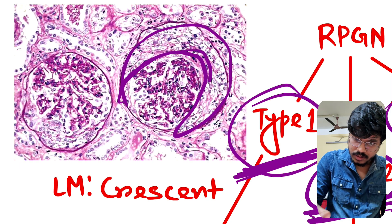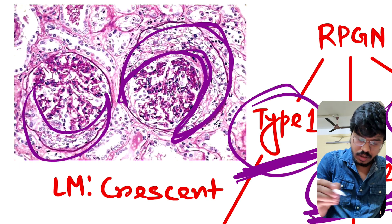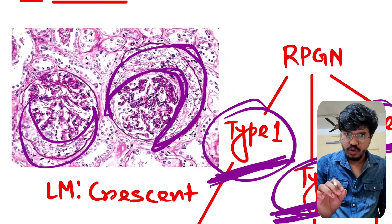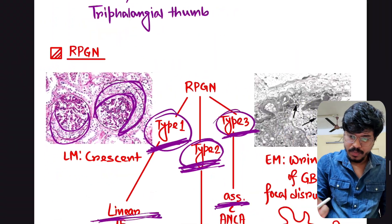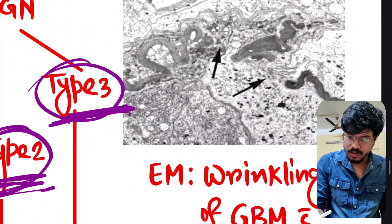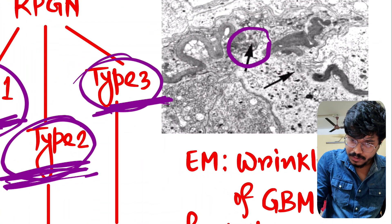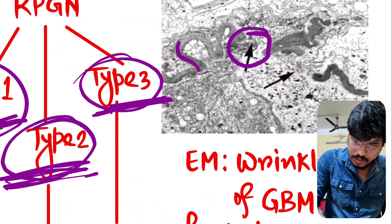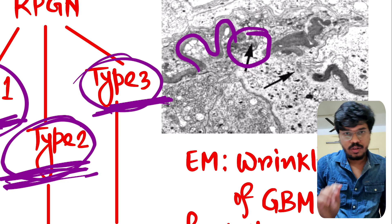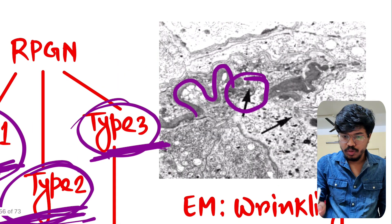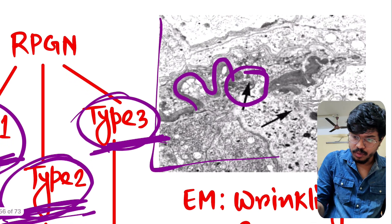This is the light microscopy picture showing crescents — this is the crescent, confirming RPGN. On electron microscopy, there are two key findings: disruption of the glomerular basement membrane and wrinkling of the glomerular basement membrane. This electron microscopy picture is very important and has appeared as a previous year exam question.